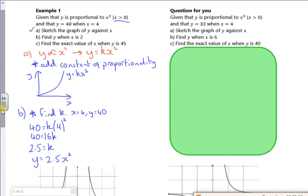I've not found out yet what y is when x is 2. So when x is 2, y is 2.5 times 2 squared. Is that going to be 10? Yeah. So that's B done.